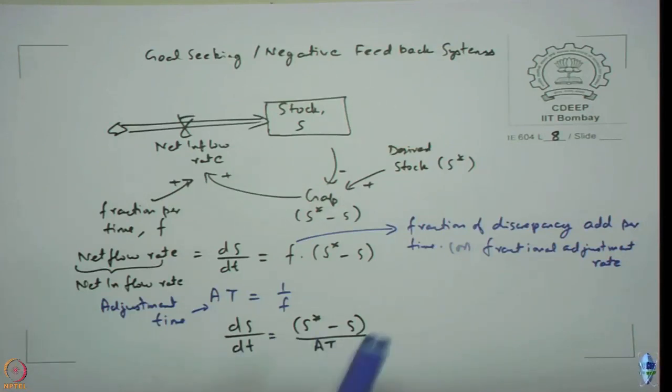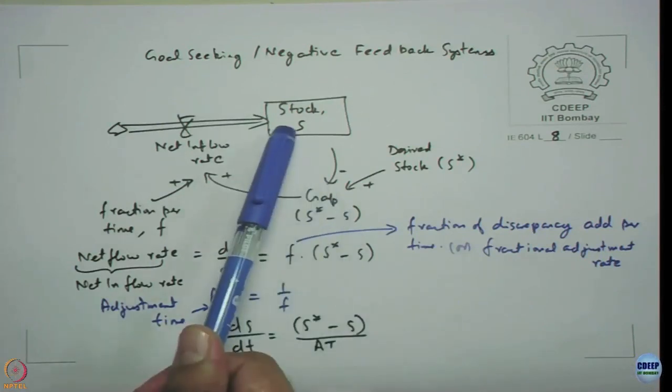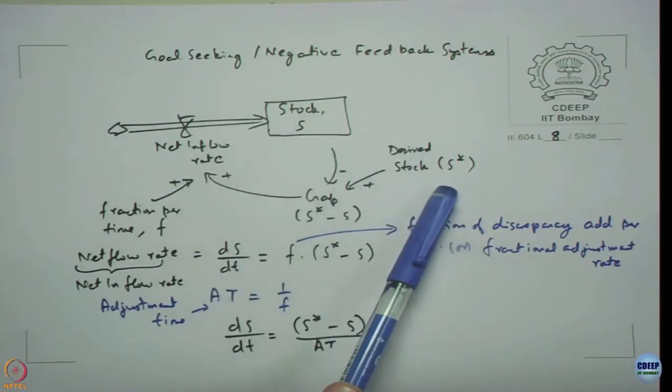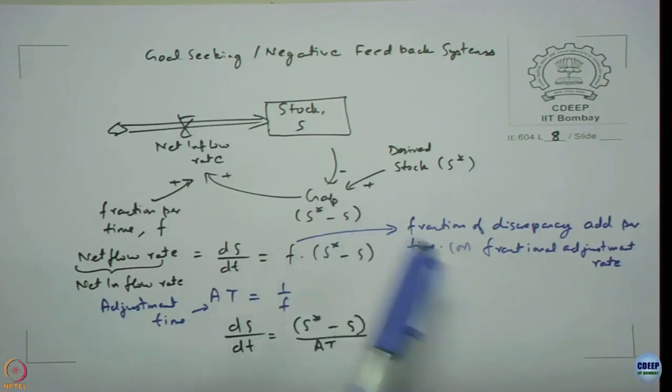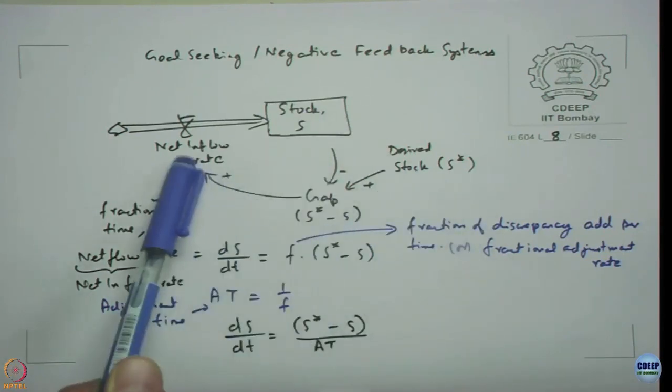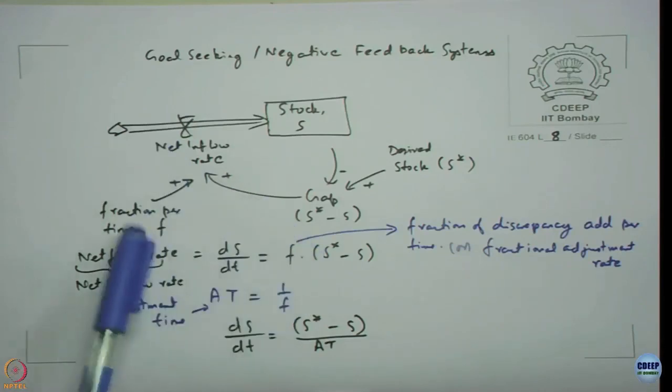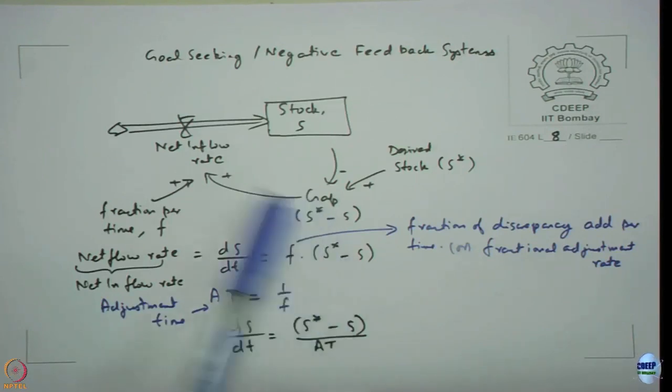In coming up with a model for this negative feedback system, all we need to define is the stock, desired stock, and immediately we know the gap. The equation for the gap is nothing but desired minus the stock. For inflow rate, we are going to either multiply by fraction rate per time, which is f, or divide by adjustment time, which is equivalent, and we define our net inflow rate. This is what you are going to learn to model today.